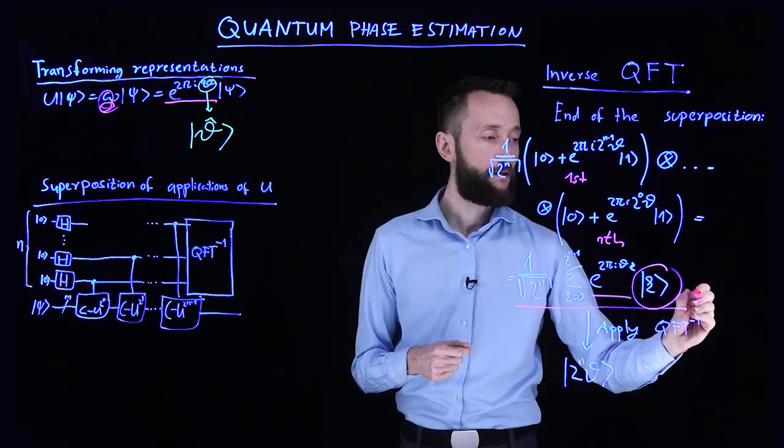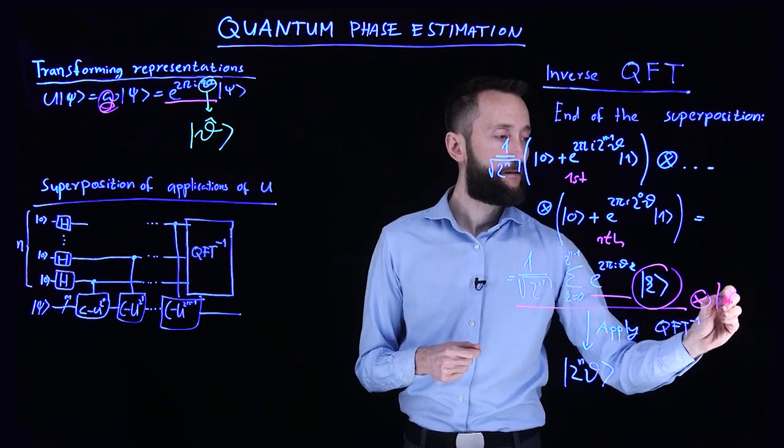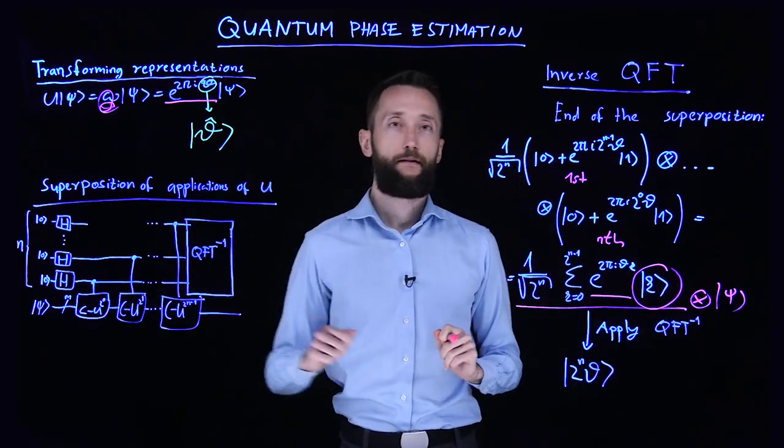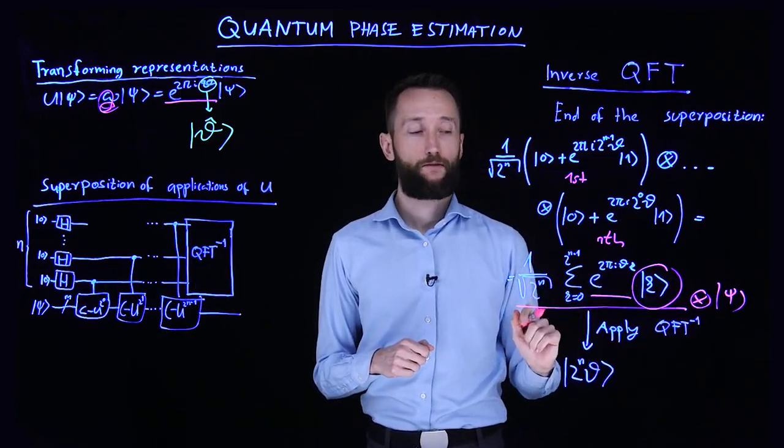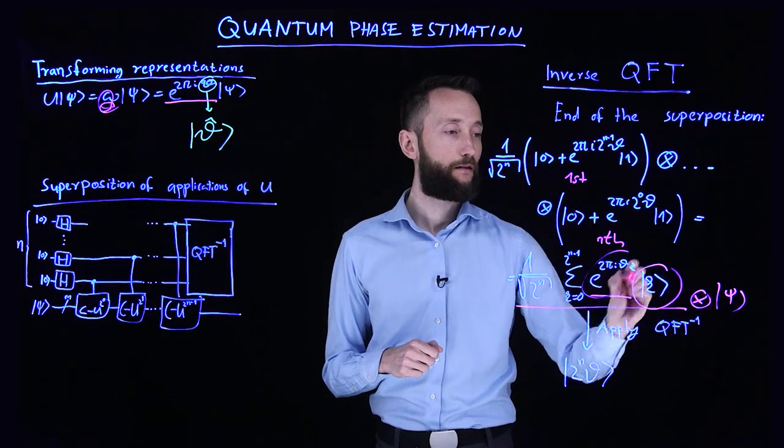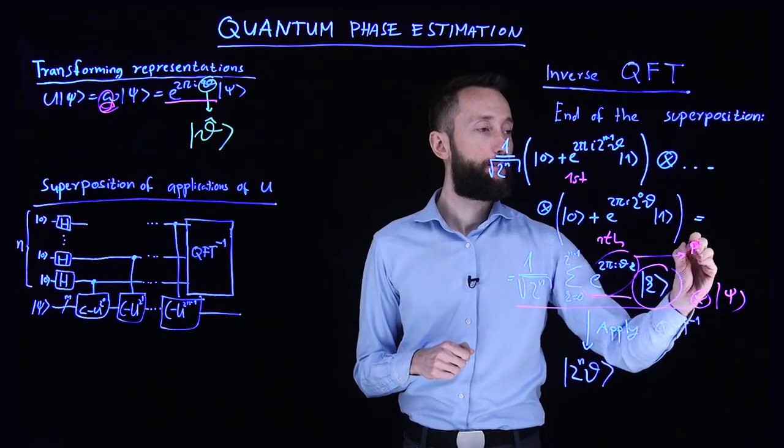You also have your original eigenvector here, but this phase is global to the entire state. This is called a phase kickback.